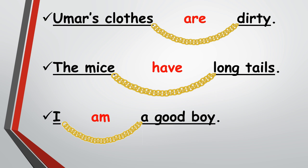More examples: 'Umar's clothes are dirty.' Here, Umar's clothes is the subject, 'are' is the linking verb, and 'dirty' is the information about the subject. 'The mice have long tails.' The mice is the subject, 'have' is the linking verb, and 'long tails' is the information. 'I am a good boy.' Here, I is the subject, 'am' is the linking verb, and 'a good boy' is the information about the subject.